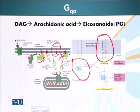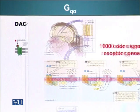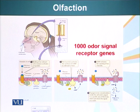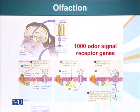Cyclooxygenase can be inhibited by aspirin. When aspirin donates its acetyl group to cyclooxygenase, it terminates its activity, thereby lowering inflammation — which is the reason for aspirin's pain-relieving effect. Now let's see how we smell, or olfaction.